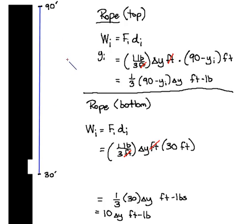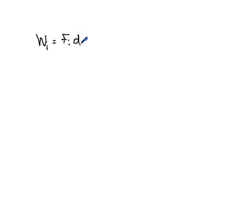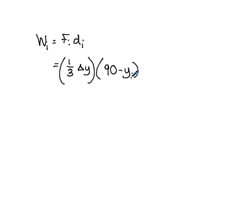Now that the bucket has been lifted and removed at the third floor, the last part of the problem is lifting the remaining rope to the top. We take a slice at height y_i and move it up to the top of the building. The distance that slice travels is 90 minus y_i. The force of that slice is one-third of a pound per foot times delta y feet, so the force is one-third delta y pounds.